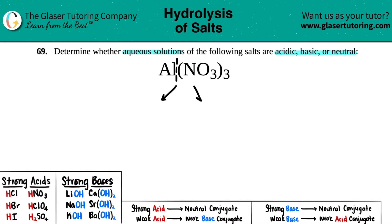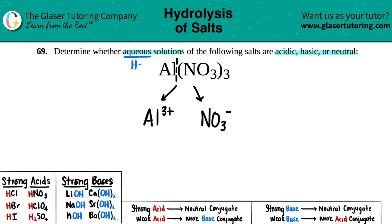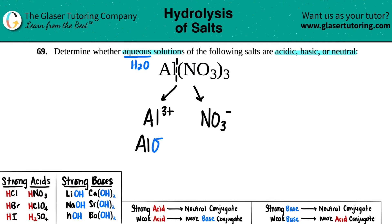This goes back to the beginning of gen chem one. We have aluminum with a 3+ charge and nitrate, NO₃⁻. Since we're talking about aqueous solutions — aqueous is always in terms of water — we're going to make conjugates of these ions. For the positive ion, you add OH from H₂O, giving aluminum with OH. For the negative ion, you add H, giving HNO₃.